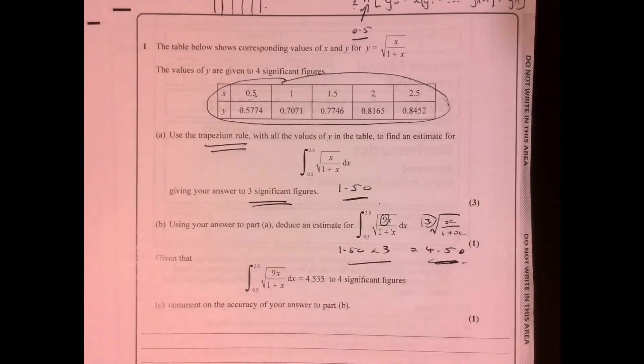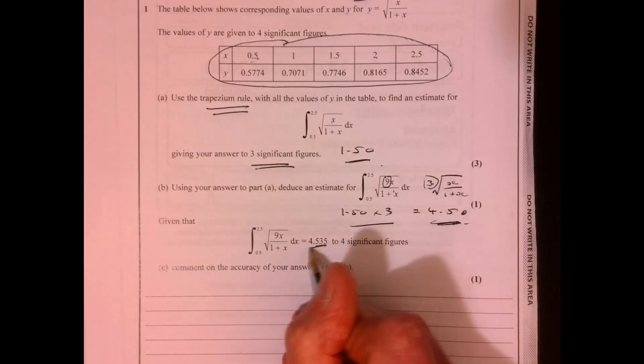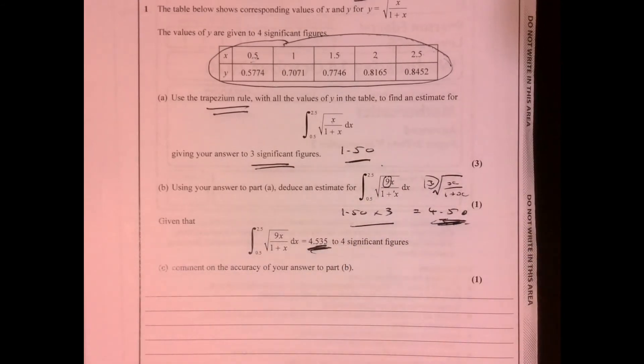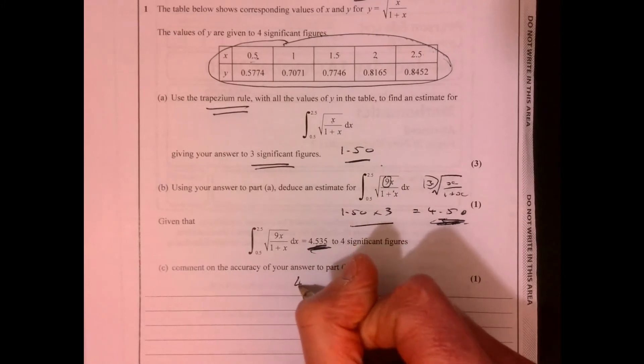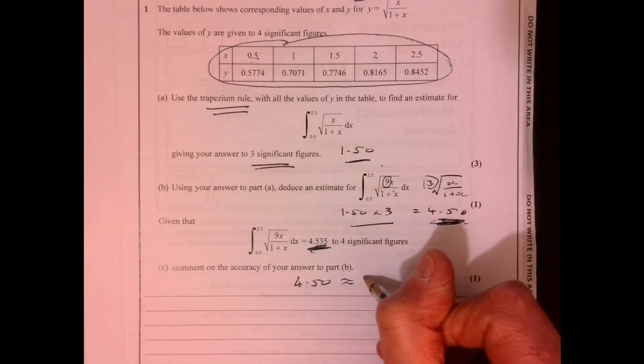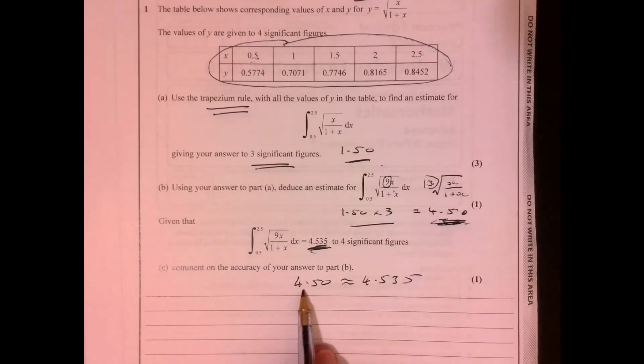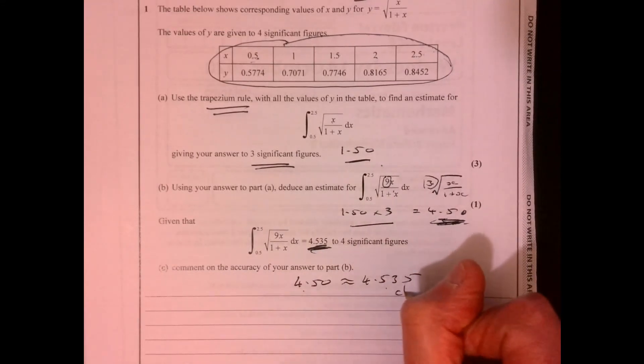And then the last part says comment on how good this actually is. So it's given us the exact figure. Our figure is 4.50. So all you've got to do here is just write down, well, kind of, they're sort of pretty much the same, aren't they? Pretty close. It's approximately, it's close.